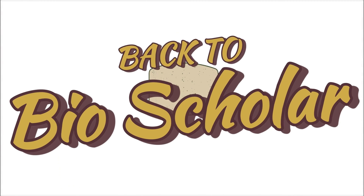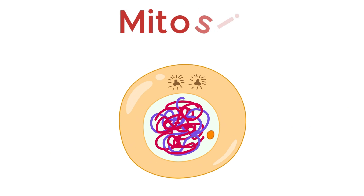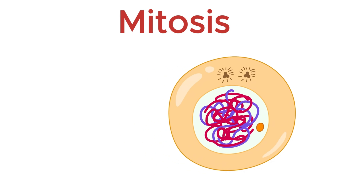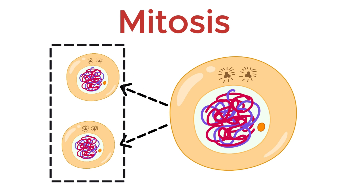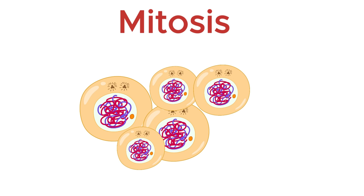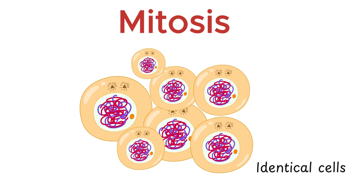Hello everyone, and welcome to Bioscholar. Let's talk about mitosis. Mitosis is the type of cell division that results in two daughter cells, where the number of chromosomes remains the same as in the parent cell. It is the typical form of cell growth that produces identical cells.